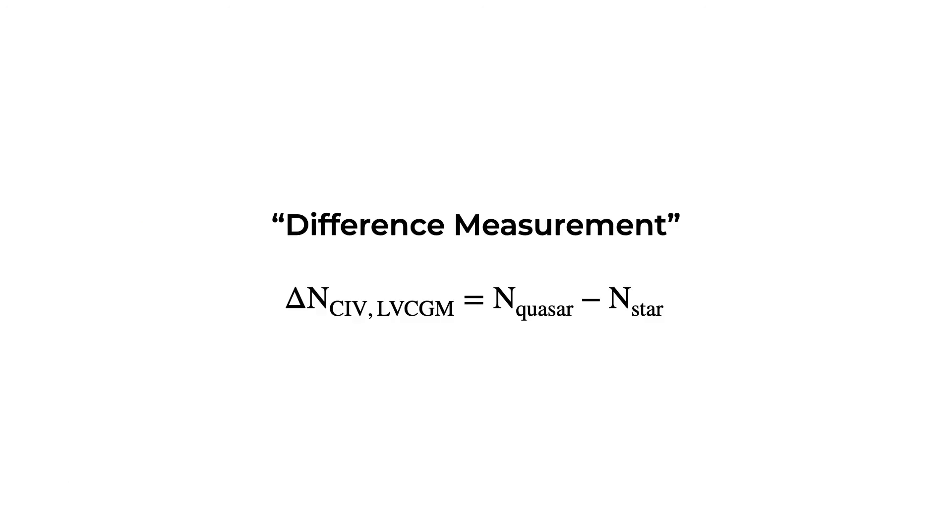To quantify the excess absorption along the quasar sightline, we define a difference measurement, which is the difference in column density between the paired star and quasar for low-velocity carbon-4. In theory, this gives us the column density of the gas in the CGM beyond the halostar.